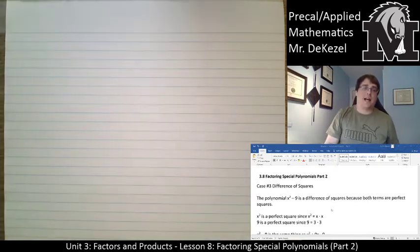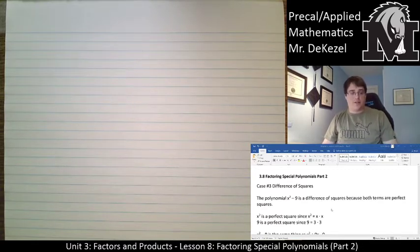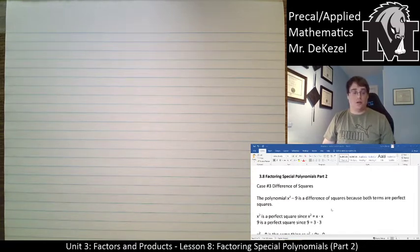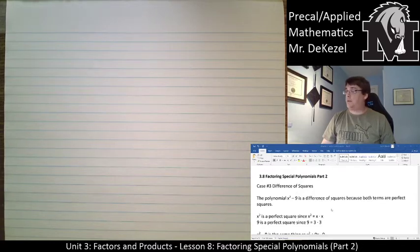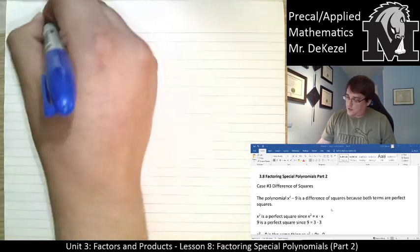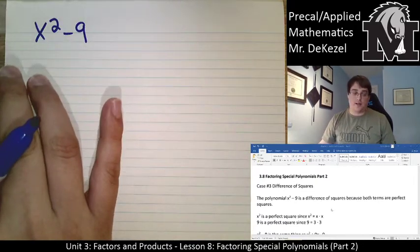Hello everyone, welcome back to the last lecture in this unit — Lesson 8: Factoring Special Polynomials Part 2. Last time we did two special cases; this time we're going to do one other case. It is called the difference of squares, as you can see on your screen below me as well as on your documents. We're going to imagine a polynomial x squared minus 9 — this is what's called a difference of squares.